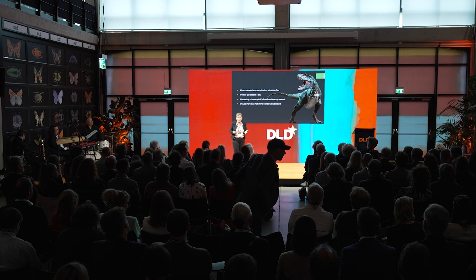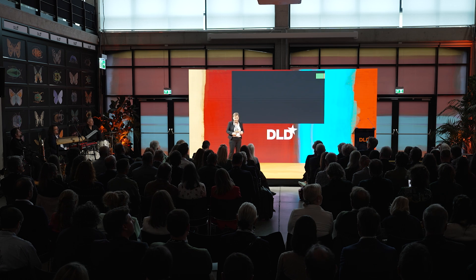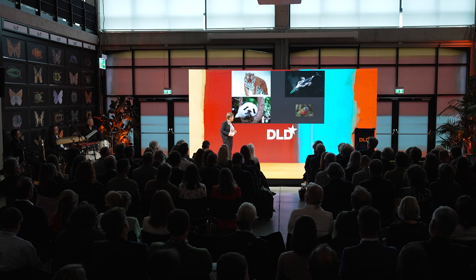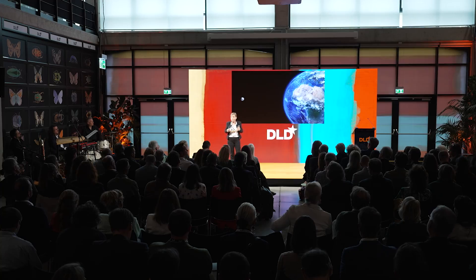Even though we are only one of at least 9 million species, we claim half of the world's habitable land for ourselves. That's bad news for tigers, blue whales, pandas, and parrots — but it's also very bad news for us. With the destruction of biodiversity and ecosystem services, we are destroying our home, making our economy sensitive to changes, and us prone to crises — food instability, refugee crises, and climate change.